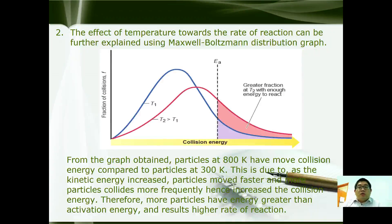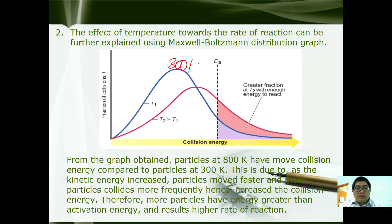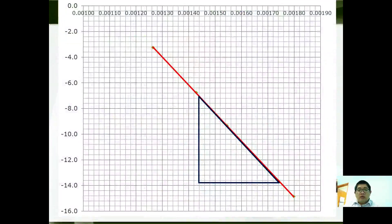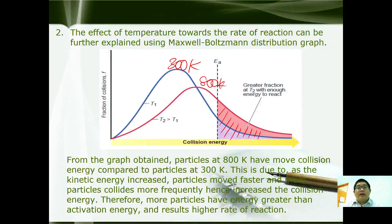The effect of temperature on the rate of reaction can be further explained using the Maxwell-Boltzmann distribution. From the graph, you can see the distribution at 300 K and at 800 K. At 800 K, there is a greater area of the curve with energy greater than the activation energy, and therefore we have a higher rate of reaction. This is how we use the Maxwell-Boltzmann distribution curve to explain the rate of reaction, since more particles have energy greater than the activation energy.